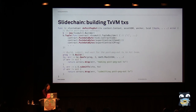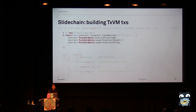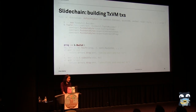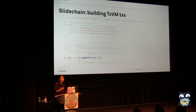TXVM also happens to be written in Go, which makes it really easy to import our contract package from TXVM, build a smart contract that includes some data, build a transaction including that smart contract, and then submit it to TXVM. So all of that is super simple.